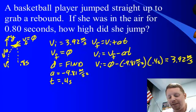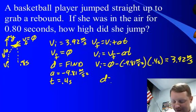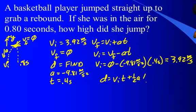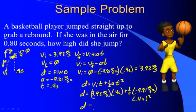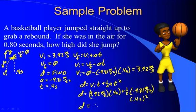Now we can solve for the displacement. Using d equals vi*t plus one-half a*t²: d equals 3.92 meters per second times 0.4 seconds, plus one-half times negative 9.81 meters per second squared times 0.4 seconds squared. Plugging all of this into the calculator, our total displacement comes out to be about 0.78 meters — a reasonable number for a vertical leap for a basketball player.